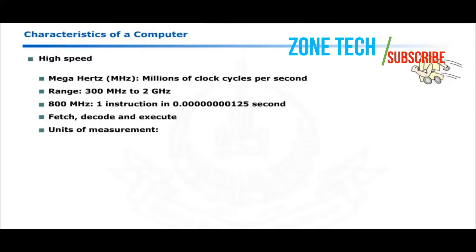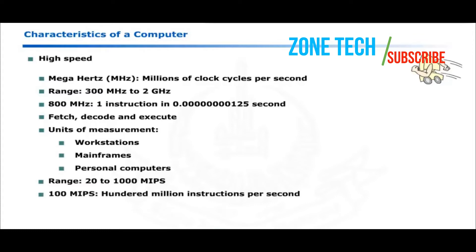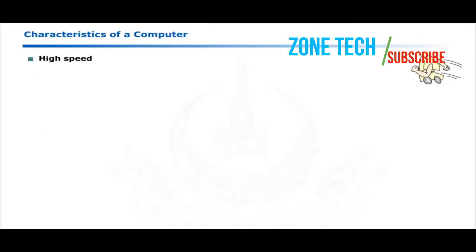The speed of workstations, mainframes, and high speed personal computers is measured in terms of millions of instructions per second. These computers operate in the range of 20 to 1000 MIPS. Typically, a 100 MIPS computer can execute 100 million instructions per second.